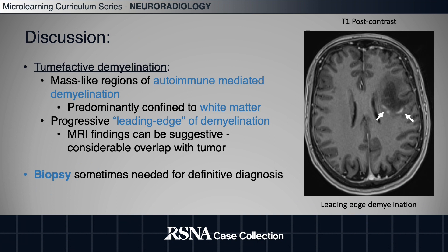Tumefactive Demyelination is mass-like regions of autoimmune-mediated demyelination predominantly confined to white matter. There is usually a progressive leading edge of demyelination with imaging features considerably overlapping with tumor. For a definitive diagnosis, biopsy is sometimes required.